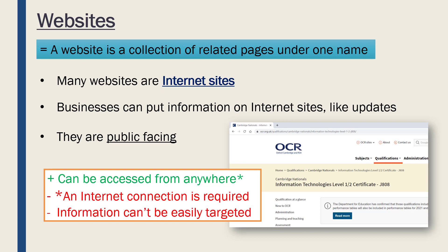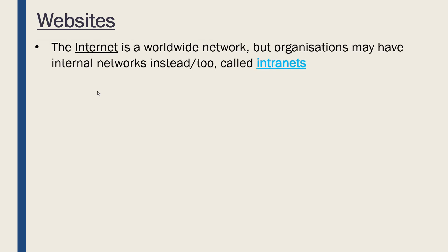Many websites are internet sites, but not all. The internet is a worldwide network — a way to share information via cables, computers, and Wi-Fi routers spanning the entire globe. But organizations will also likely have their own internal networks, either instead of or as well as internet access. These internal networks are called intranets. 'Inter' as a prefix means between, and 'intra' as a prefix means inside, so internal networks are called intranets.